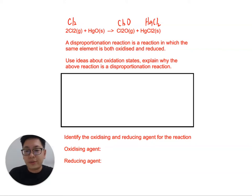Okay, so here you're given a redox question, and I think some of you didn't manage to do this question in class, so I want to very quickly talk about this. So here you're given what you call a disproportionation reaction. It's a reaction where the same element is both oxidized and reduced. And you're asked to use ideas about oxidation states, explain why it's disproportionation.